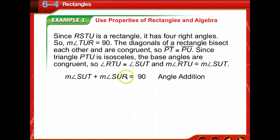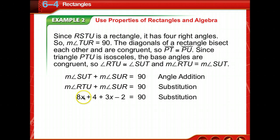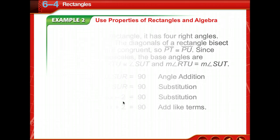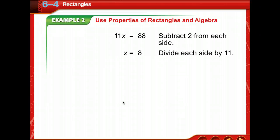Since they're both equal to 90 due to angle addition, we can substitute RTU for SUT. We're given that angle RTU is 8X plus 4 and angle SUR is 3X minus 2. Setting those equal to 90 and adding like terms, we solve for X. Therefore, X equals 8.